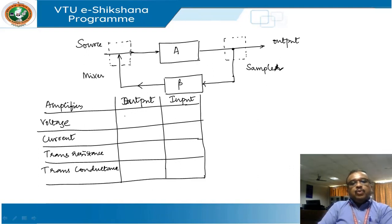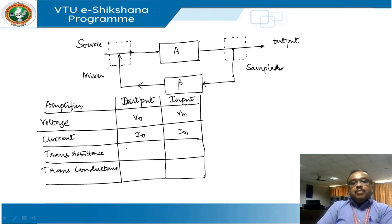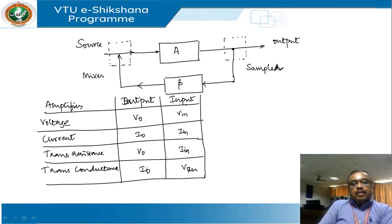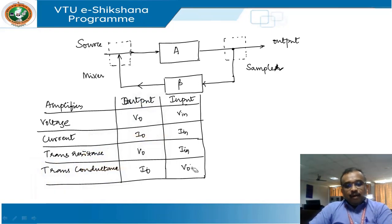For a voltage amplifier, the output is a voltage and the input is Vin (voltage). For a current amplifier, output is a current I0 and input is a current. For trans-resistance, the gain is V0 by Iin. For trans-conductance, which is the reverse, the gain is I0 divided by Vin.